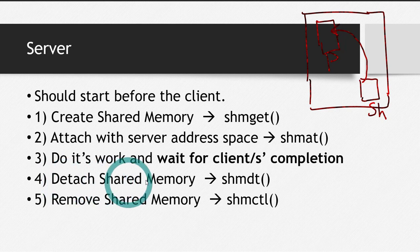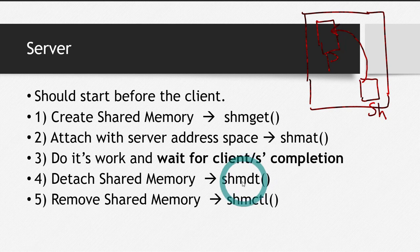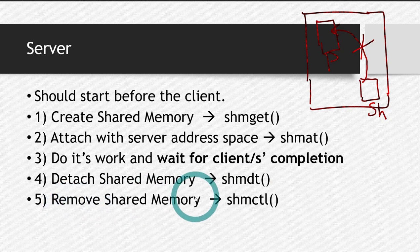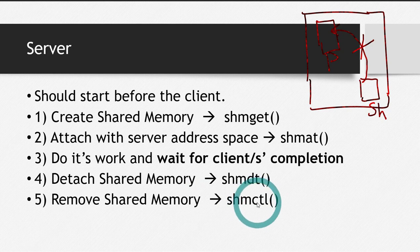Step number four is detach the shared memory. When we detach the shared memory using the system call SHMDT, this pointer connection is broken down. Afterwards, the fifth step is remove the shared memory using the system call SHMCTL. Using this call, the shared memory is deleted. These are the five steps of the server.